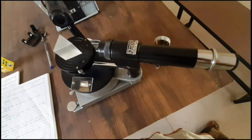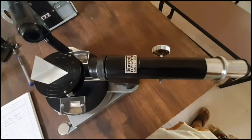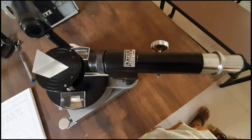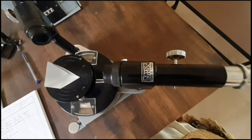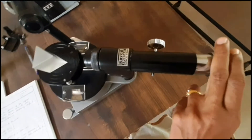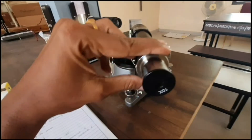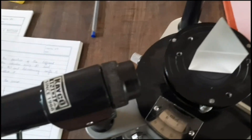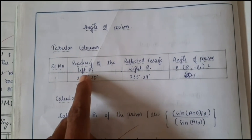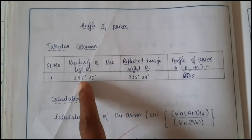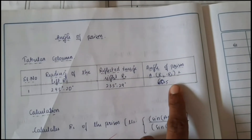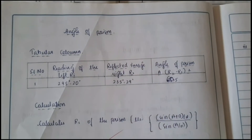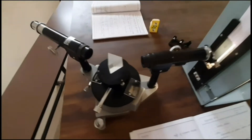For both clockwise and anti-clockwise directions you have to take two readings to find out the angle of prism: reading of the left R1 and reading of the right R2. We move the telescope to the left side and adjust the slit width. Once we get R1 and R2, we can calculate the angle of prism. R2 is 295 degrees; if we subtract these two readings and divide by 2 we get the angle of prism, which is around 60 degrees.